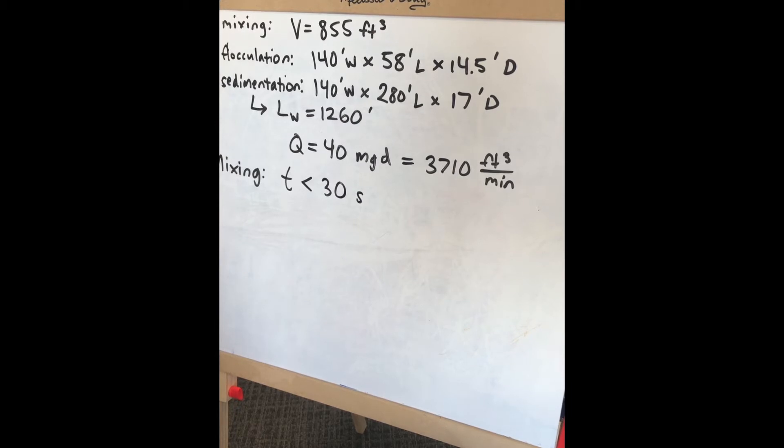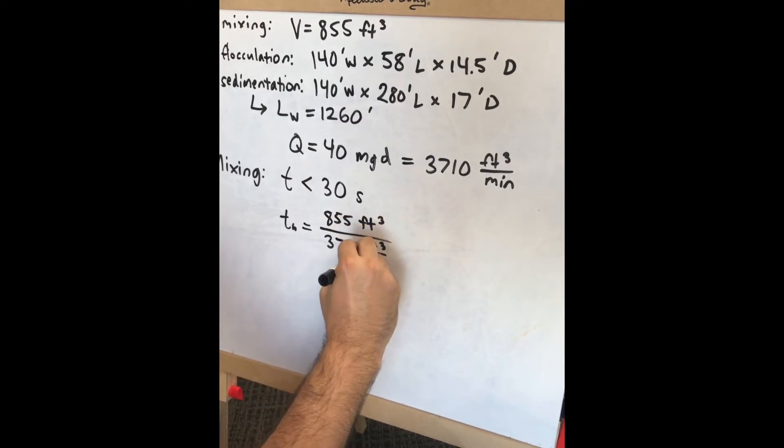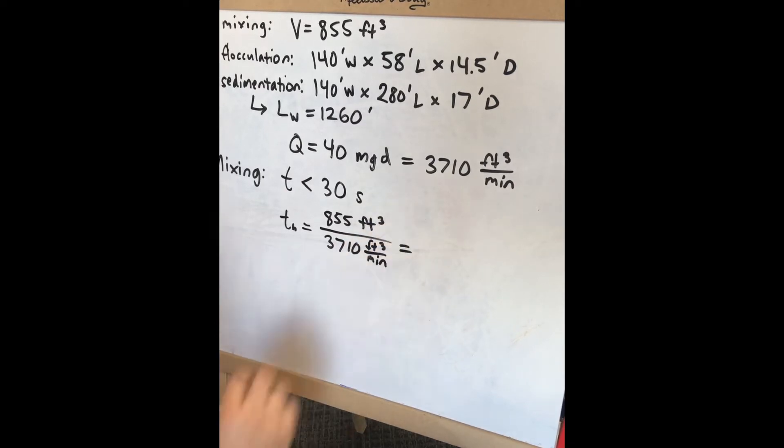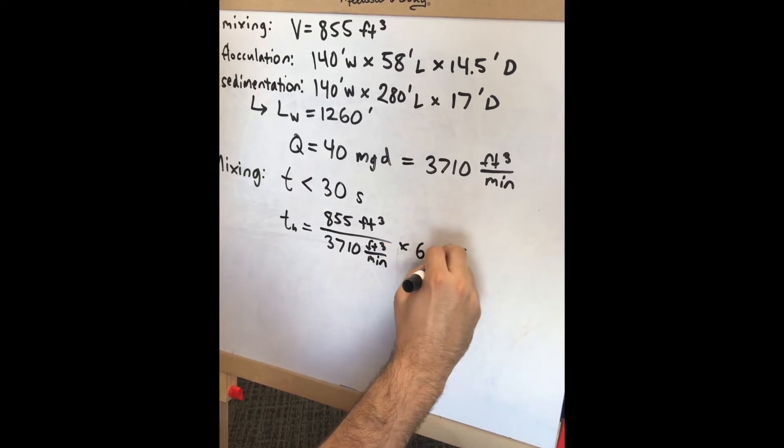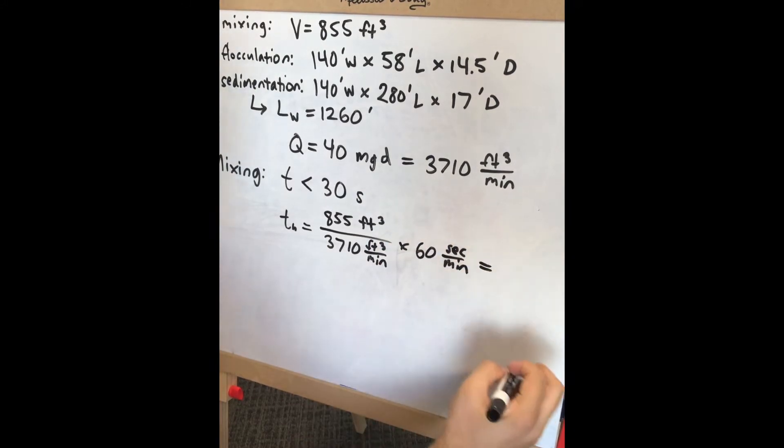We calculate the theoretical hydraulic retention time given the dimensions of the system: 855 cubic feet divided by 3710 cubic feet per minute, multiplied by 60 seconds per minute.